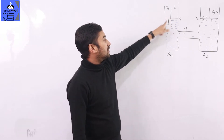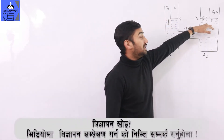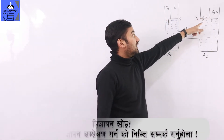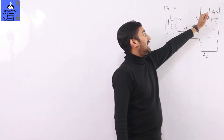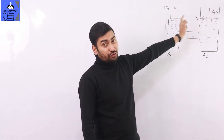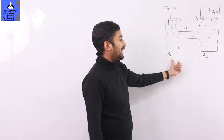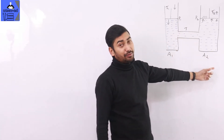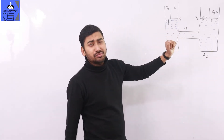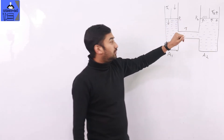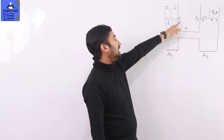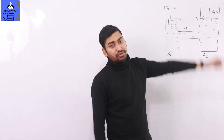A force F1 is applied on piston P1, and F2 is the force on piston P2. The force F2 is different from F1 because the area is different. The pressure is the same throughout. Capital P1 and P2 represent the pressure on piston 1 and piston 2 respectively.